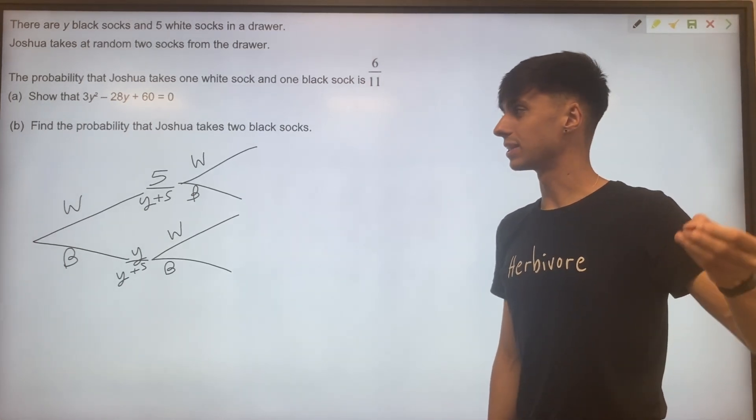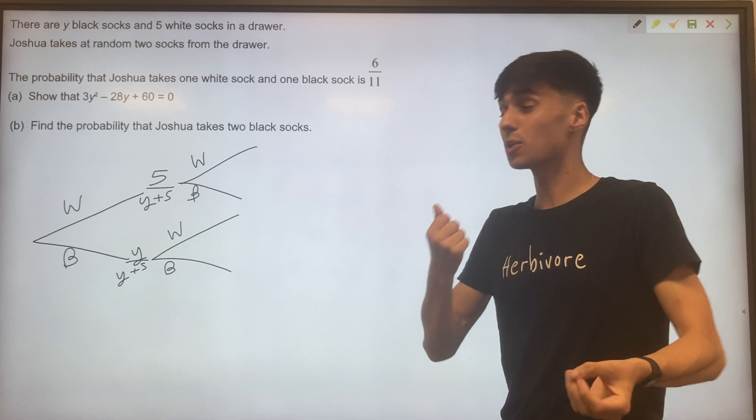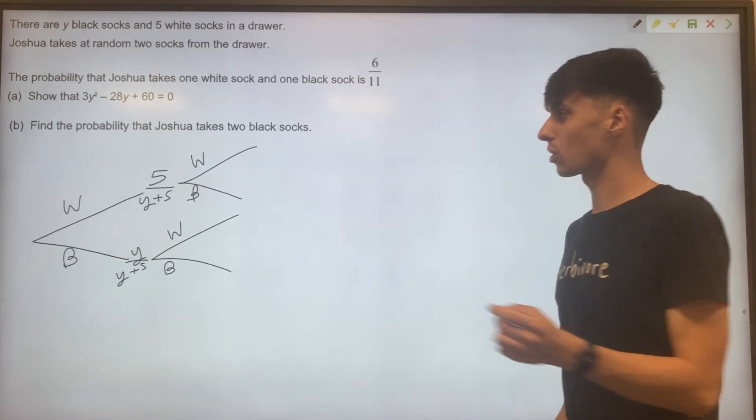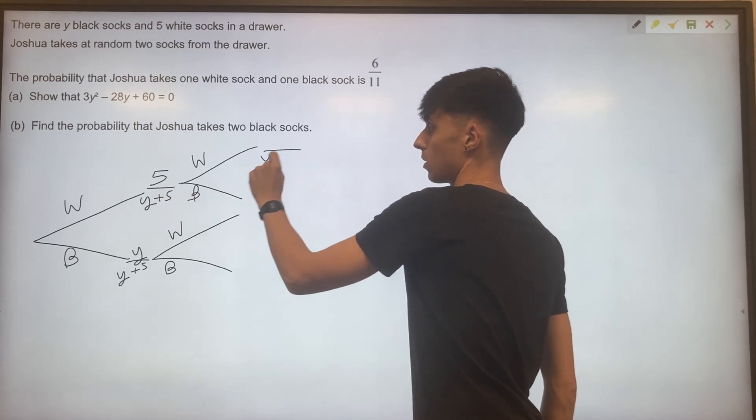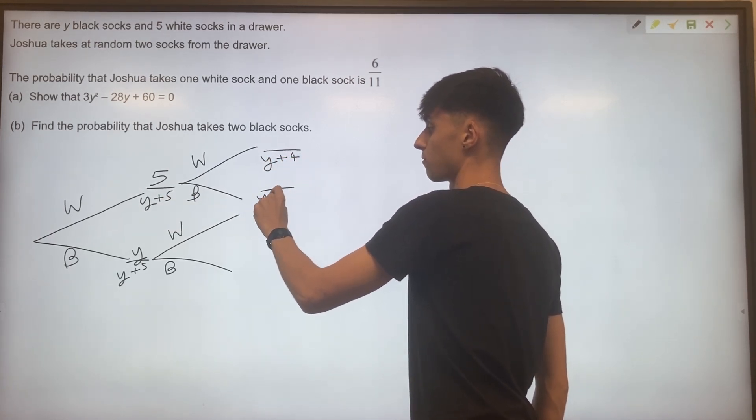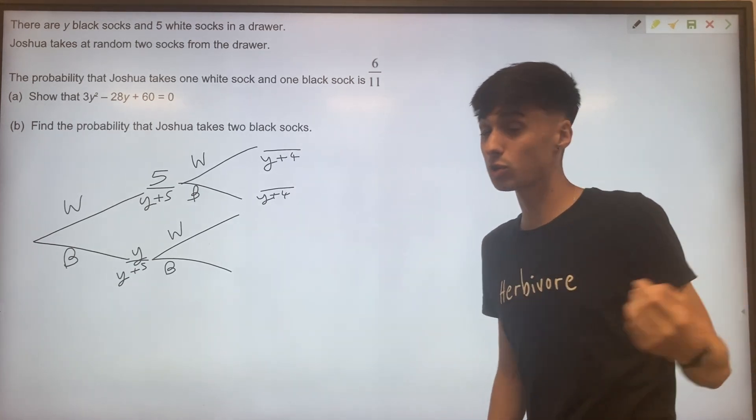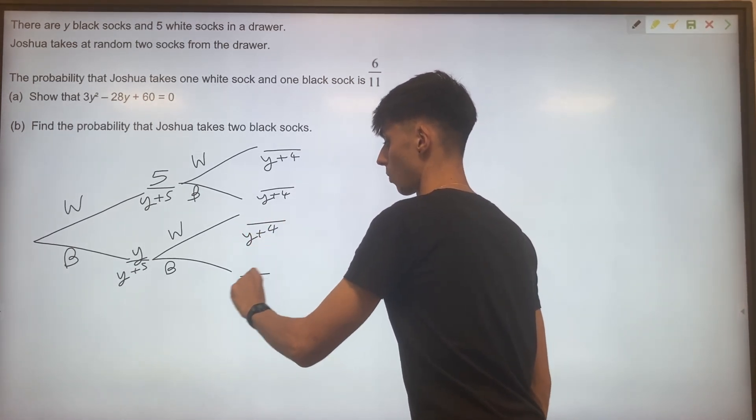However, for the second pick, Joshua takes a sock and he puts it on. He doesn't put it back in the drawer. So actually our total on the second round has decreased by one from y plus five to just y plus four now. And that's true no matter which outcome you look at. So we're always looking at y plus four.